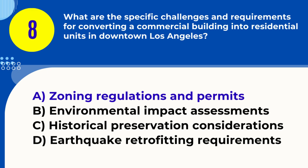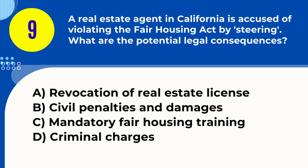Question 9. A real estate agent is accused of violating the Fair Housing Act by steering. What are the potential legal consequences? A. Revocation of real estate license B. Civil penalties and damages C. Mandatory fair housing training D. Criminal charges. Answer: B. Civil penalties and damages. Explanation: Steering violates the Fair Housing Act and a real estate agent may face civil penalties and damages for such actions.